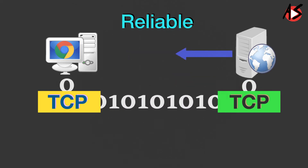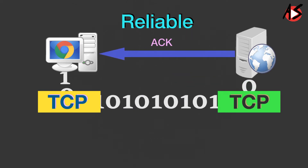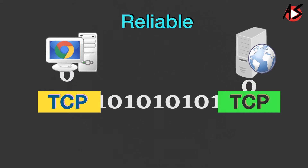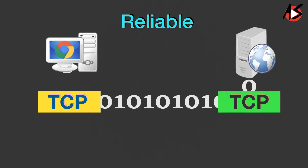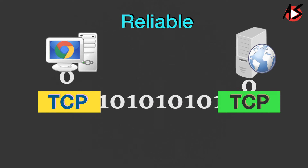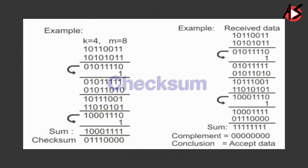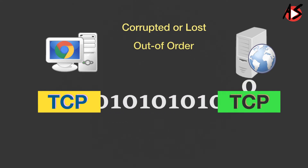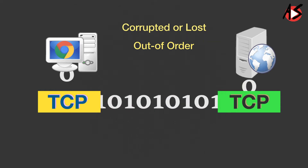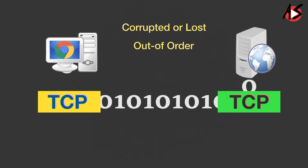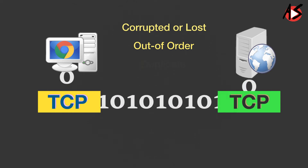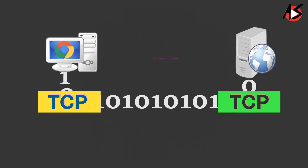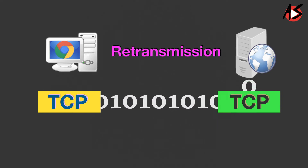TCP uses acknowledgments to confirm the receipt of data segments. TCP error control includes mechanisms for detecting and discarding corrupted segments using checksums, retransmitting corrupted or lost segments, storing out-of-order segments until missing segments arrive, and detecting and discarding duplicate segments. The most important mechanism for error control is the retransmission of segments.